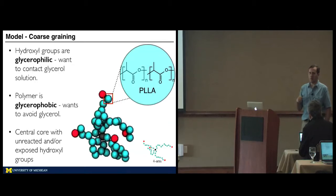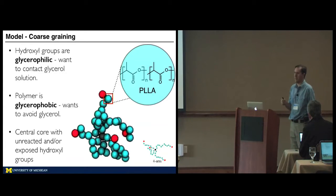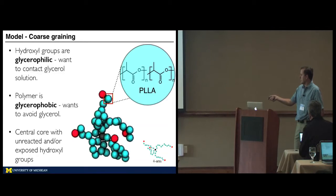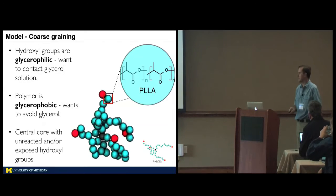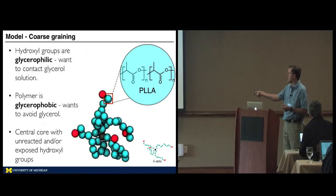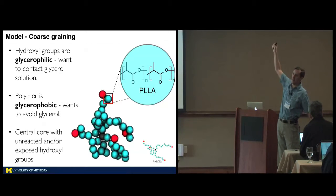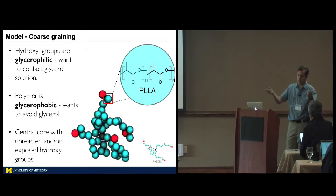We model this at a very coarse-grained level — the physics is pretty simple, it's just immiscibility — so the DPD polymer model is natural to apply. The polymer itself is glycerophobic; it wants to avoid the solvent and stay as far away from the solvent particles as possible. The hydroxyl groups on the end are glycerophilic, and so they want to be in contact with the solution. Changing the number of arms increases our hydroxyl density, and changing the length of the arms changes the geometries these polymers can adopt — whether they can reach their arms from an outside solution to the inside solution inside the droplet, or whether they're long enough to reach from the inside all the way out to the edge.